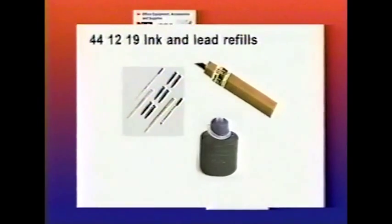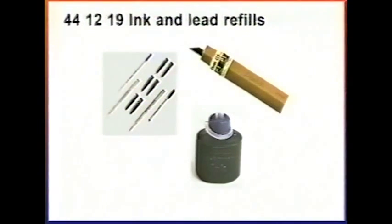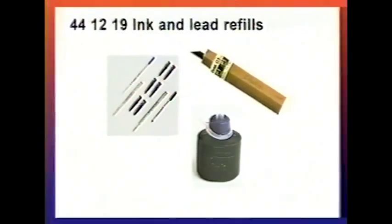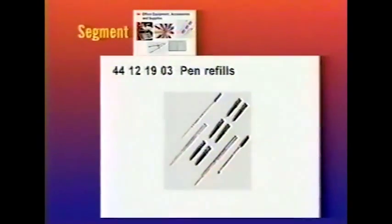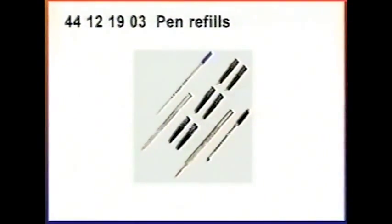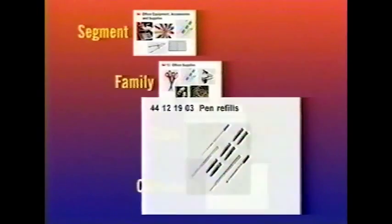Ink and lead refills would fall into the class level — these are a group of commodities sharing a common use or function. The commodity level would include pen refills. A commodity is part of a group of substitutable products or services.